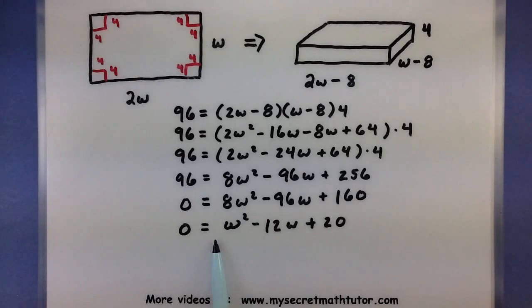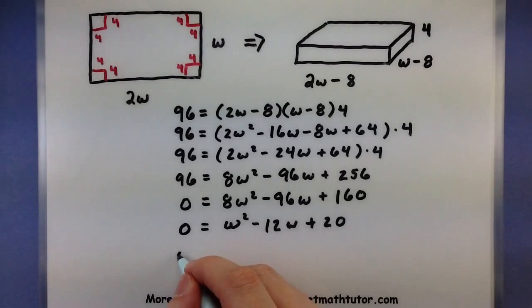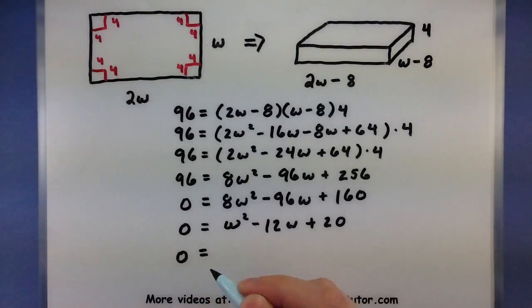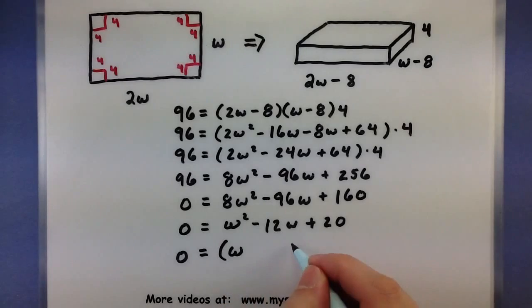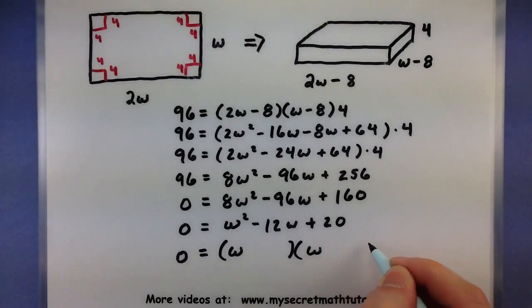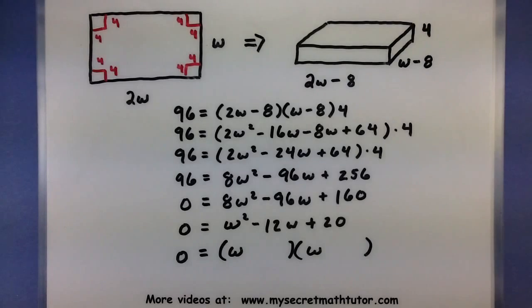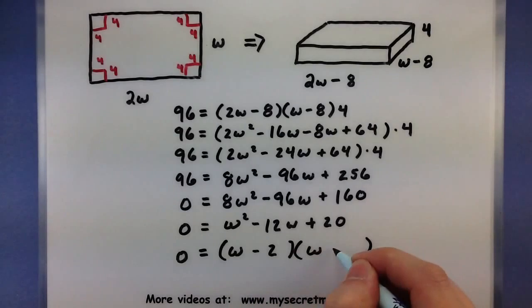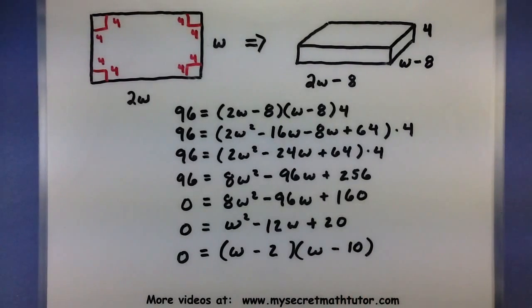So to solve this, all I have to do is factor the remaining quadratic and set both of the factors equal to 0. Alright. Not too bad. Looks like both my beginning terms need to be a W since they'll multiply and give me a W squared. And then two numbers that will multiply to be 20 and add to be negative 12, that must be a negative 2 and a minus 10. Perfect.